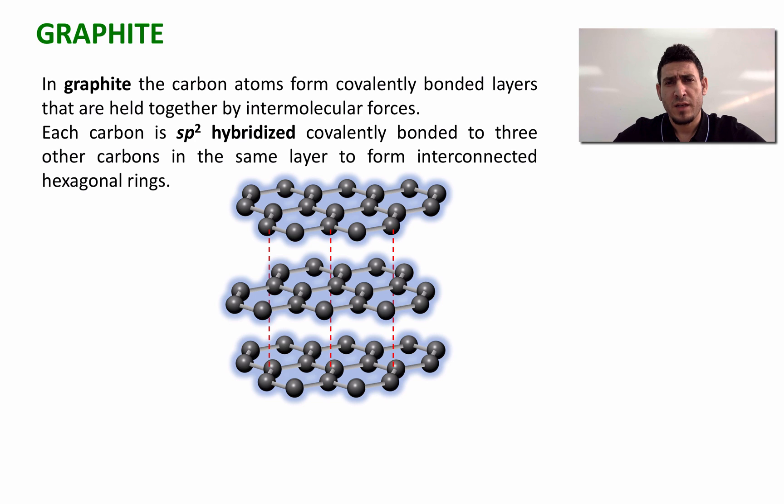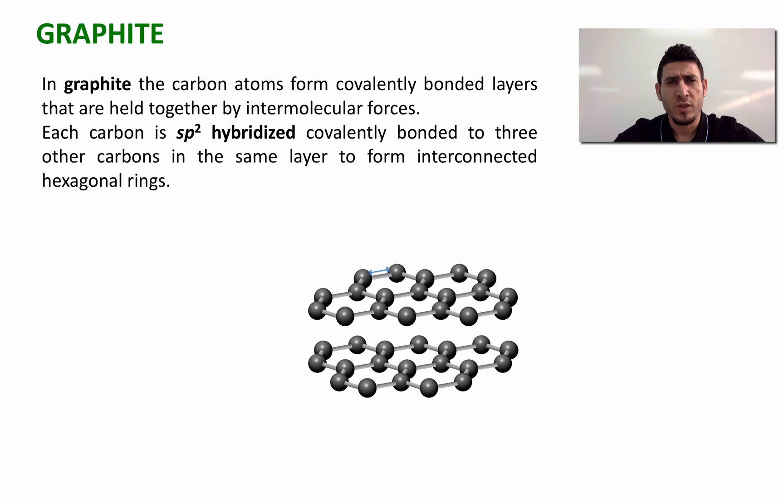The bond length between two carbon atoms in graphite is equal to 1.42 angstrom, which is very similar to that which exists in a benzene ring. The distance between two layers is equal to 3.35 angstrom. The two layers are connected together by weak intermolecular interactions called London dispersion forces.